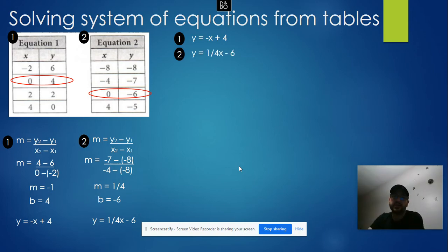You can do it by graphing, substitution, or elimination. In this case, I'm going to do it by substitution, even though probably graphing will be the easiest. By substitution, I'm going to substitute y on both sides with the expression, so I'll have one equation in terms of x: negative x plus 4 equals 1 over 4x minus 6.